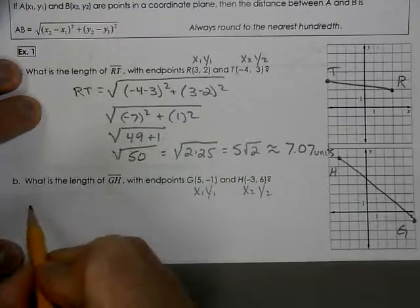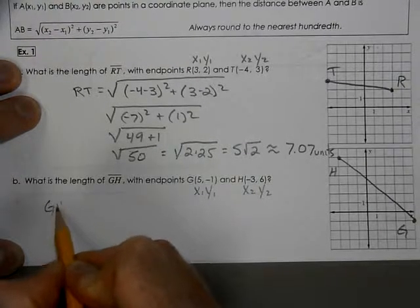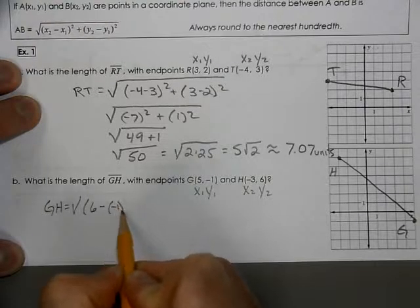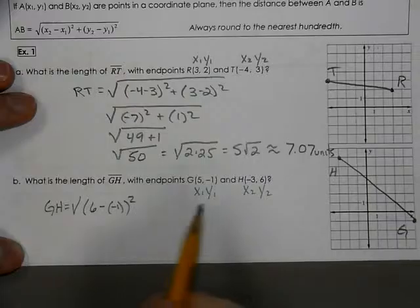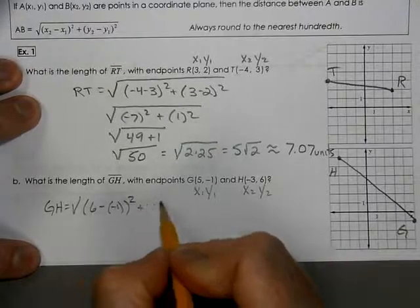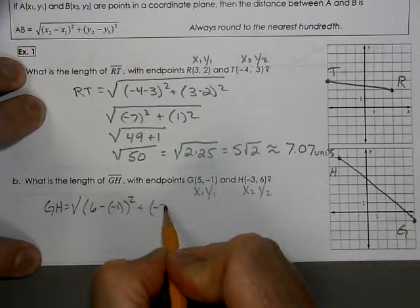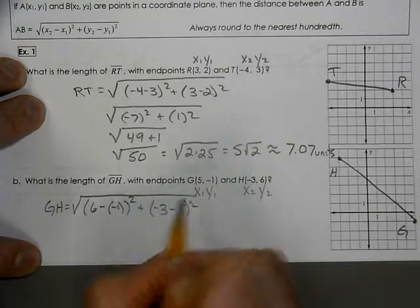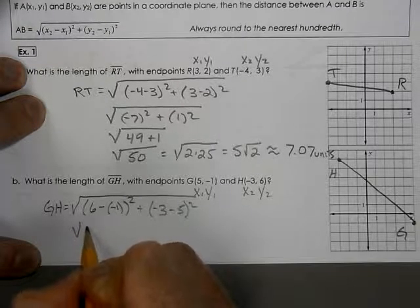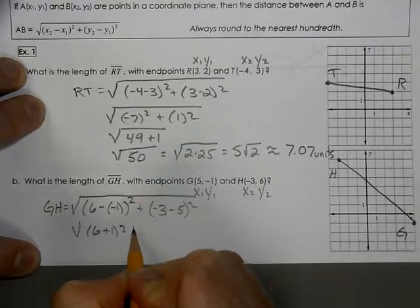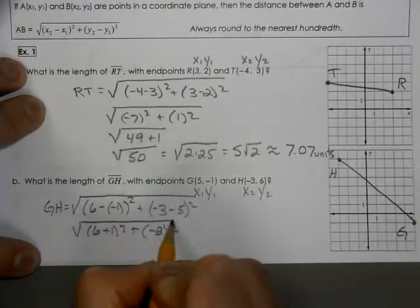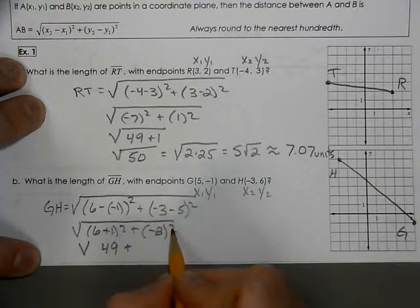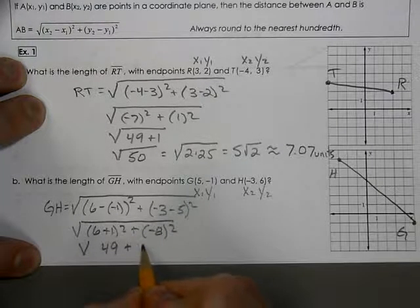We label our points X1, Y1, X2, Y2, and plug it into our formula. GH equals the square root of 6 minus negative 1 squared plus negative 3 minus 5 squared. Notice I used parentheses because Y1 is a negative. Then we get 6 plus 1 squared, which is 7 squared or 49, and negative 8 squared is 64.